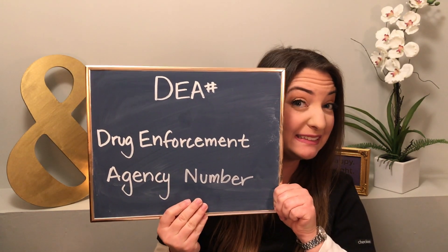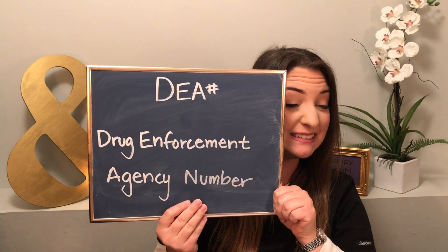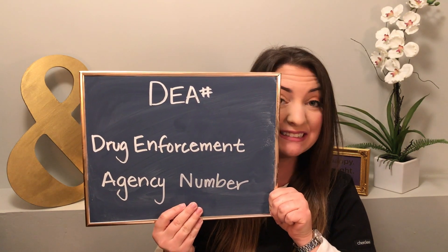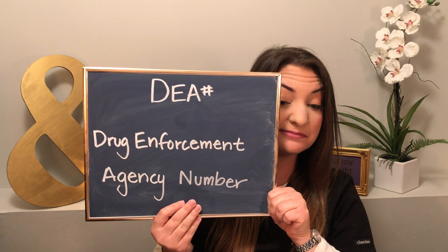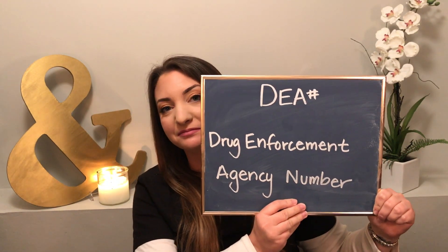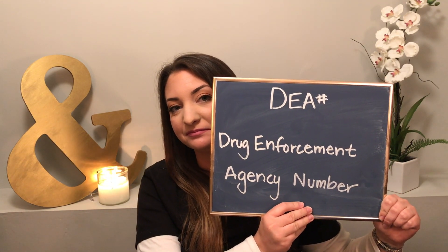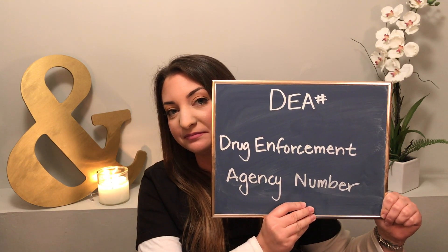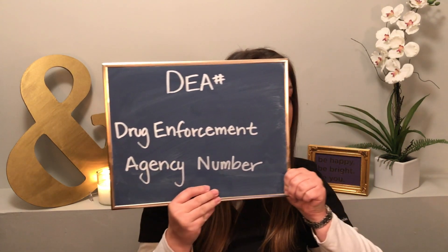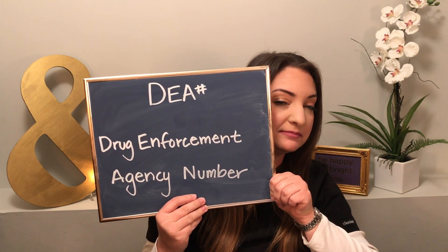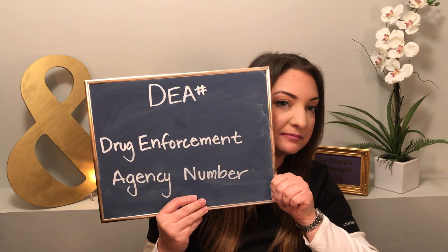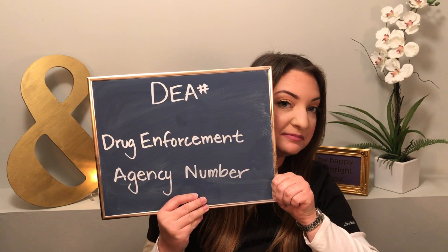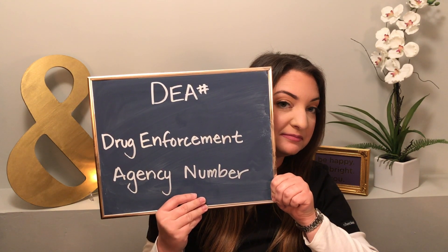This next one gets very important: it is the DEA number. Every physician has a Drug Enforcement Agency number, which means they have got the DEA number to write controlled substance prescriptions. Every provider has one - whether they're a nurse practitioner, a doctor, or a physician assistant, they all need a DEA number in order to prescribe medications, and the pharmacy needs to have this information as well.